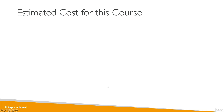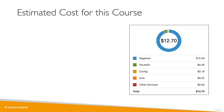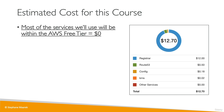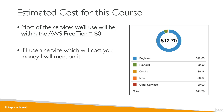Since we are going to do hands-on practice in this course, you may wonder how much it will cost you. This is how much it cost me at the end of this course: $12.70. I want to tell you right away that most of the services we'll use will be within the AWS free tier, so there is a chance your cost could be zero. If I use a service that will cost you money, I will mention it and give you the option to not do the hands-on and just watch me instead.